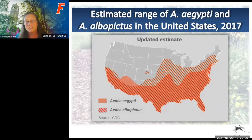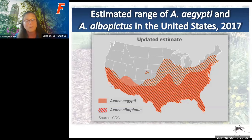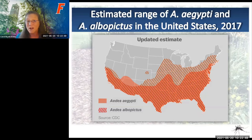Aedes aegypti and albopictus are tropical and subtropical mosquitoes found throughout Florida, along the Gulf states, all the way west to California, and as far north as Maine—even over to Minnesota and down through Missouri, Kansas, Utah, and Colorado. As weather patterns continue to shift and change, these areas of dispersal will continue to broaden and expand. As it warms up, these mosquitoes will likely become problematic throughout the US.